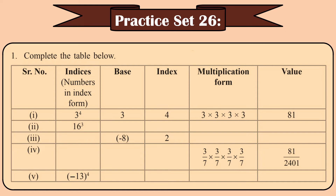Look at the second sum: 16 raised to 3. The base is 16 and the index is 3. For the multiplication form, how many times am I going to multiply 16? Three times. So it is 16 into 16 into 16, and the answer is 4,096.